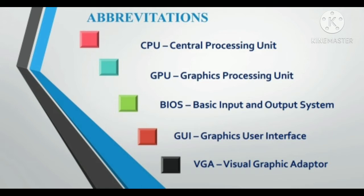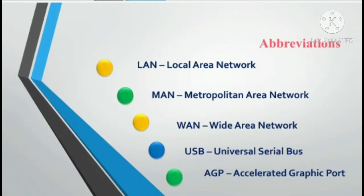BIOS: Basic Input and Output System. GUI: Graphics User Interface. VGA: Visual Graphics Adapter. LAN: Local Area Network. MAN: Metropolitan Area Network. WAN: Wide Area Network. These are actually based on how much area a network can cover — LAN, WAN, and MAN.